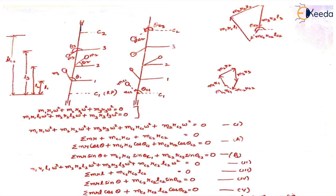Let's assume this is the rotor which is fixed at ends and is rotating with some angular velocity omega. It has three masses: m1 at radial distance r1, m2 at radial distance r2, and m3 at radial distance r3. Their angular positions are also known, taken counterclockwise from the reference x-axis: theta1 for mass 1, theta2 for mass 2, and theta3 for mass 3. We have also taken plane C1 as the reference plane, and the distance of mass 1 from this reference plane is l1, similarly l2 for mass 2 and l3 for mass 3.